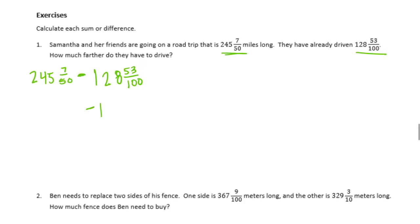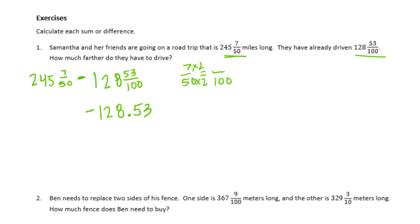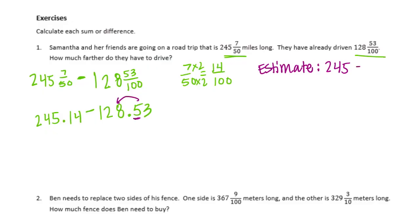Now 128 and 53 hundredths I can easily make into a fraction because it's already out of hundredths. But 7 fiftieths isn't. So I'm going to take 7 fiftieths and make it into hundredths — I can multiply 50 times 2 to get 100, and 7 times 2 is 14 — so we have 14 hundredths: 245 and 14 hundredths. Now let's estimate: 245 and 14 hundredths I'll leave as 245, minus 128 and 53 hundredths, I'll round that to a 9. I need to borrow — 15 minus 9 is 6, 3 minus 2 is 1, 2 minus 1 is 1 — so my estimate is about 116.